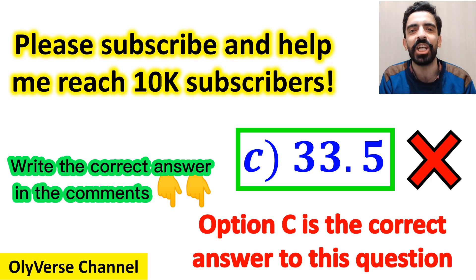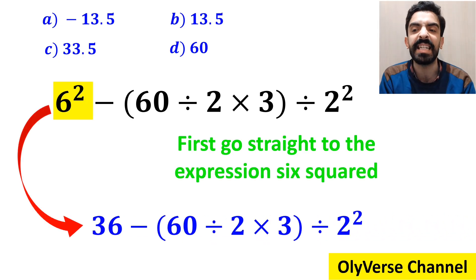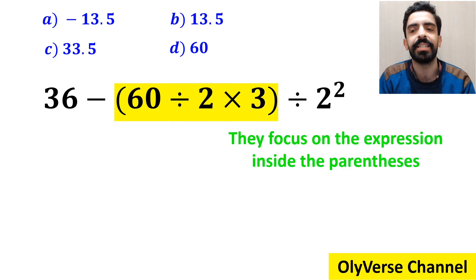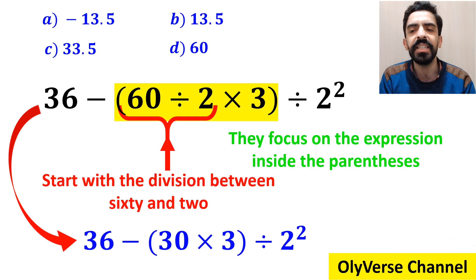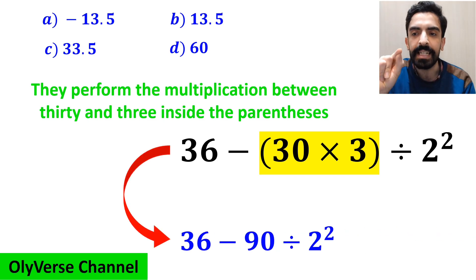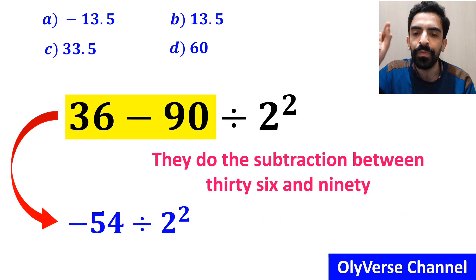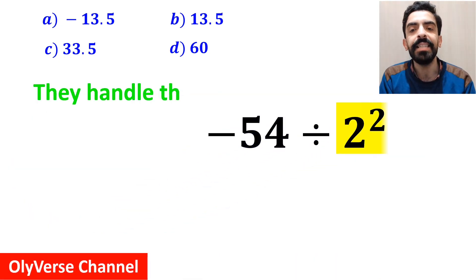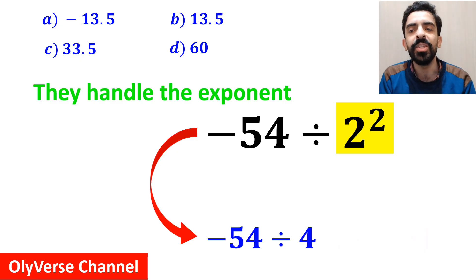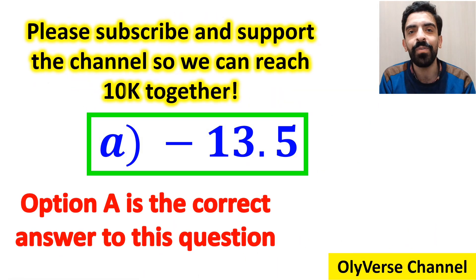However, that's not the correct answer. Some other people first go straight to the expression 6 squared and simplify it to 36 minus 60 divided by 2 times 3 inside the parenthesis, then divided by 2 squared. Next they solve the division inside the parenthesis — 60 divided by 2 — getting 36 minus 30 times 3 inside the parenthesis, then divided by 2 squared. They perform the multiplication to get 36 minus 90 divided by 2 squared, then subtract 36 minus 90 to get negative 54 divided by 2 squared, and finally handle the exponent to get negative 54 divided by 4, which gives negative 13.5. They conclude option A is correct. However, that's definitely wrong.